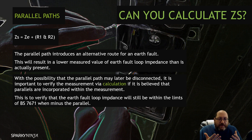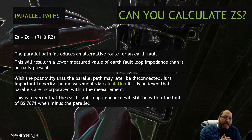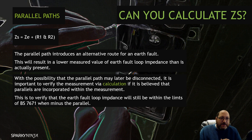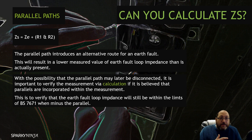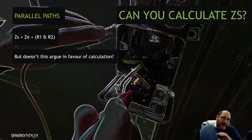If there's a fault here, some of the earth fault current will go one way and some will go the other — two parallel resistances. So a parallel path introduces an alternative route, resulting in a lower value of earth fault loop impedance than is actually present. Is that a good thing? Well, the thing is, what if that parallel disconnects later? If you've got an earth fault loop impedance that was expected to be just shy of the limit, but was way above it — you didn't know because the parallel brought it down — and then the pipework is changed to plastic, it could spike up. So if you're aware of parallels, it's important to also calculate the test, not instead of measuring, but to verify the ZS will be within regulation limits if the parallel were to disappear.